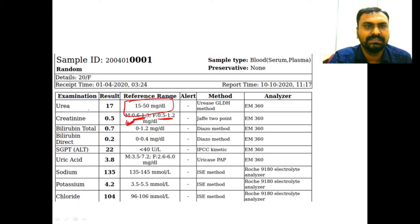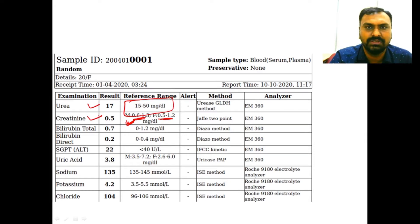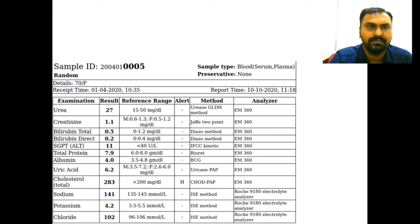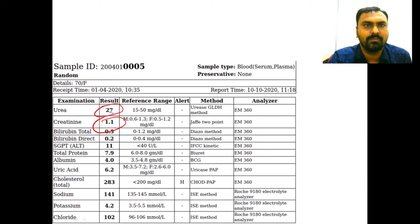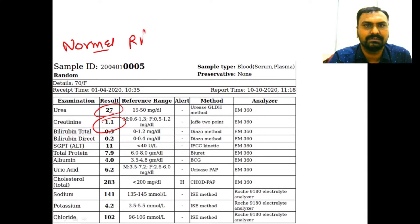If you see a report with urea 17 and creatinine 0.5, this is a normal report — the patient's kidney function is normal. Similarly, urea 27 and creatinine 1.1 is again a normal report, indicating normal renal function.